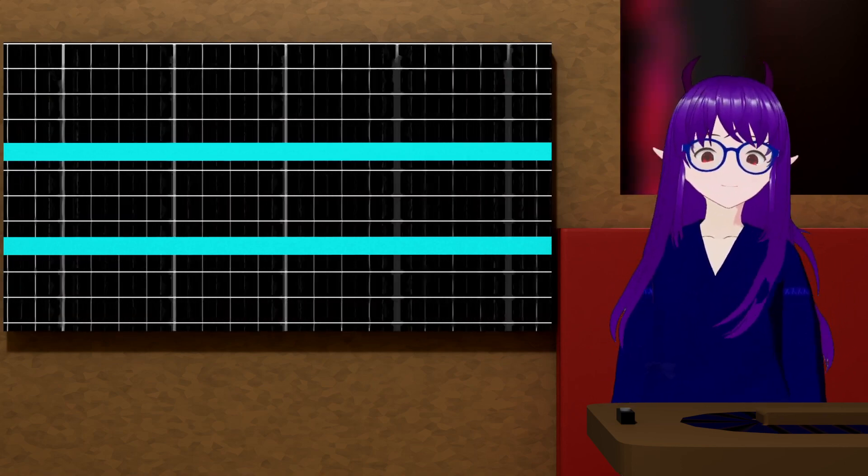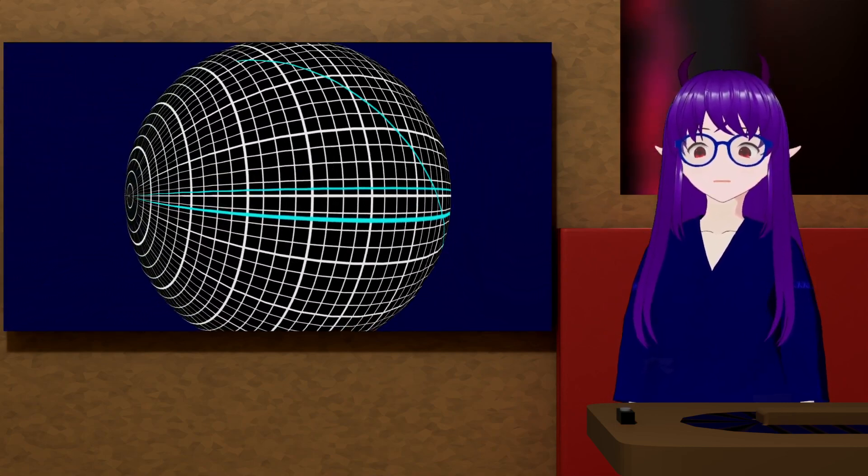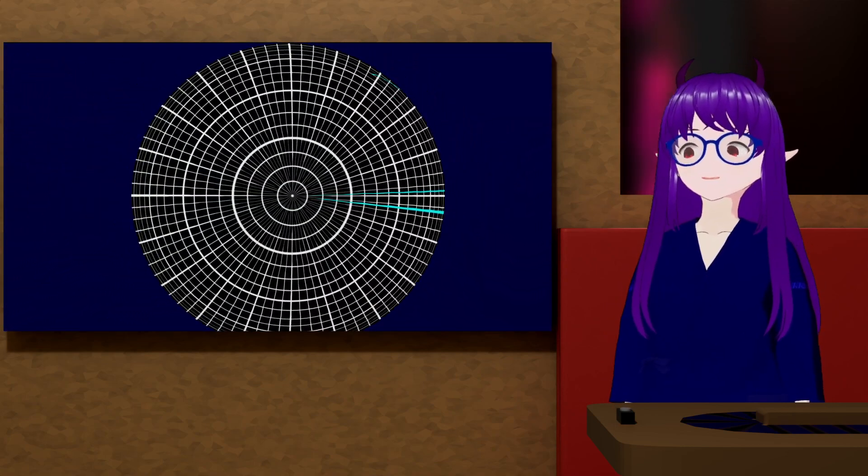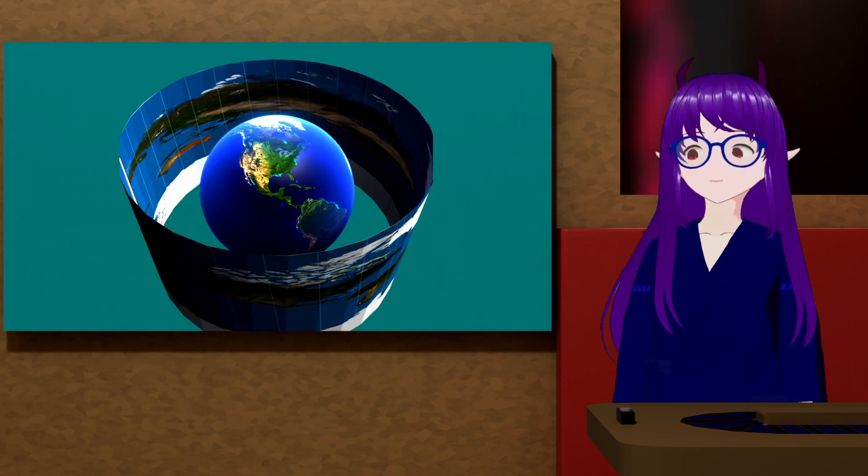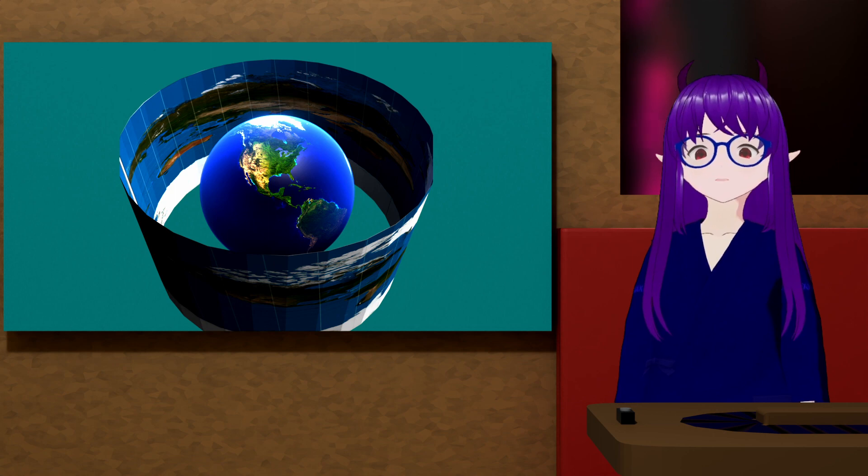But there are other geometries. For example, there is spherical geometry where parallel lines eventually meet at the poles. The geometry of navigation is spherical geometry. So how can spherical geometry be scary?